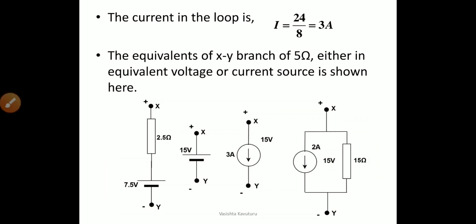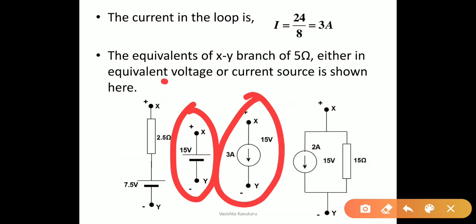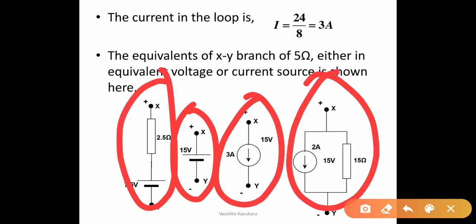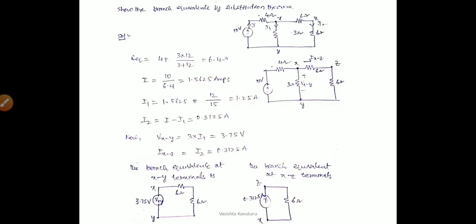These two are the representation of ideal sources, and these two are nothing but representations of practical sources — with resistance connected in series for the voltage source, and in parallel for the current source, as shown in the figure.